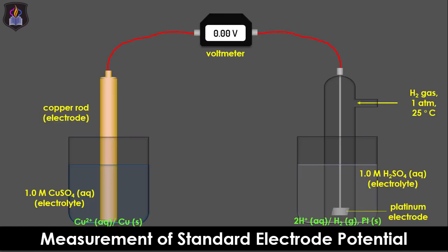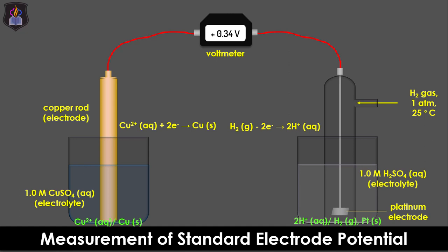Similarly, if the copper half cell is connected to the standard hydrogen electrode under standard conditions, electrons will flow from the hydrogen electrode to the copper half cell, and the reading on the voltmeter will be plus 0.34 volts. This value, being the reduction potential of the copper electrode, means that copper cannot reduce hydrogen ions. Rather, copper(II) ions can be readily reduced by hydrogen gas because copper is less electropositive than hydrogen in the electrochemical series.